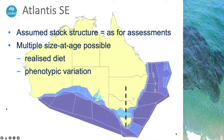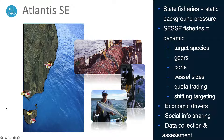It gives a much more varied realized diet and allows for phenotypic variation, which is great if you also want to explore evolution and biodiversity. There's been just as much effort put into the representation of fisheries in this model, including home ports, differing metiers or fleets with their different gears, vessel sizes, quota trading mix, shifting targeting, and different risk preferences or profiles for the skippers.